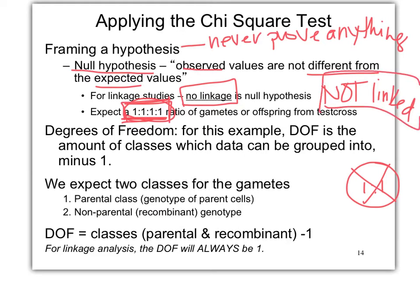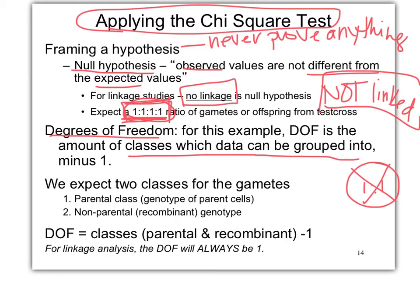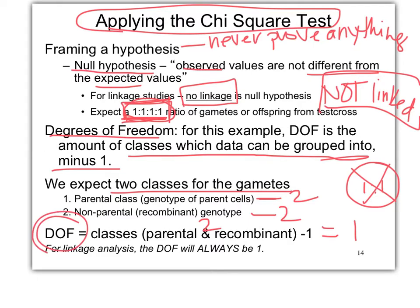For this statistical analysis we need to know our degrees of freedom: the number of classes data can be grouped into, minus one. We always group gametes into two classes — a parental class and a recombinant class. Two classes minus one equals one, so degrees of freedom are always one — no exceptions.